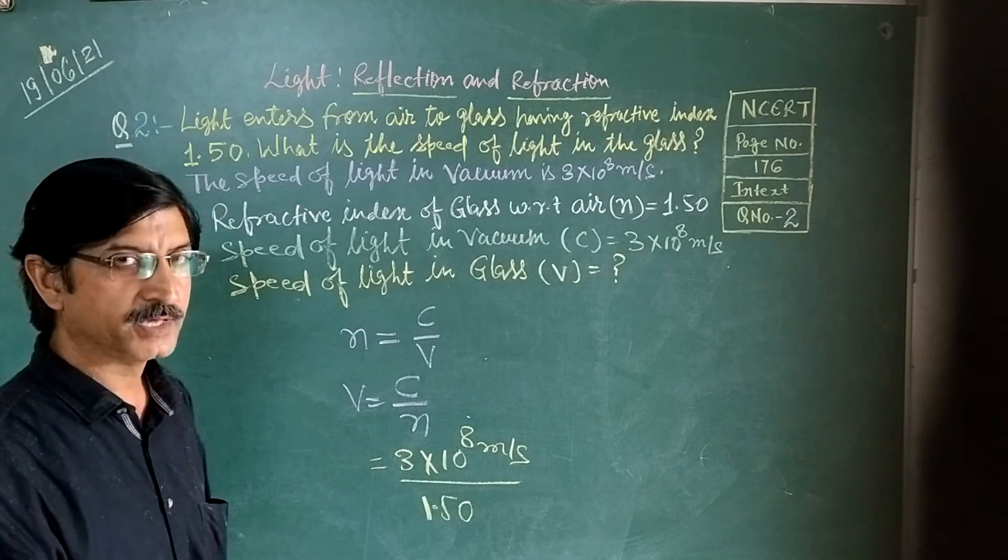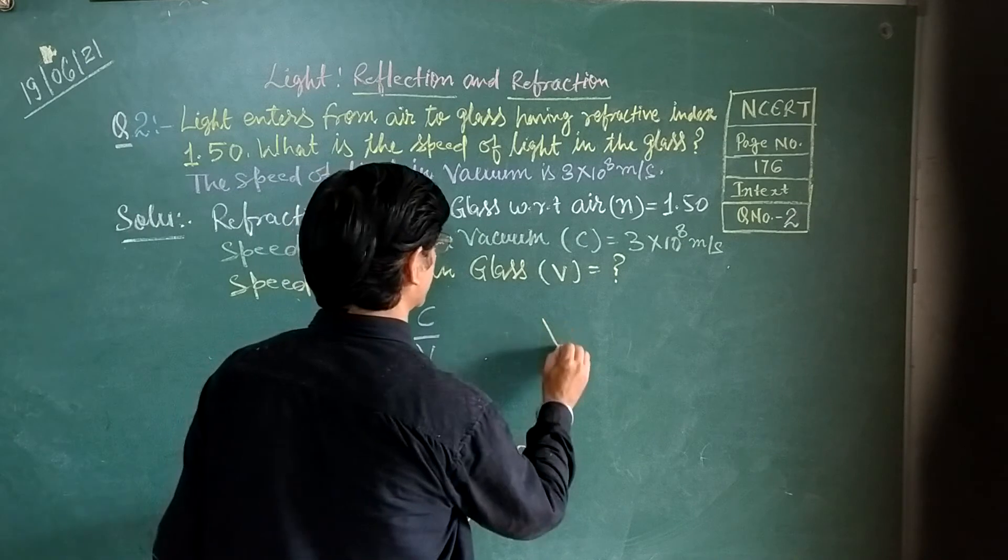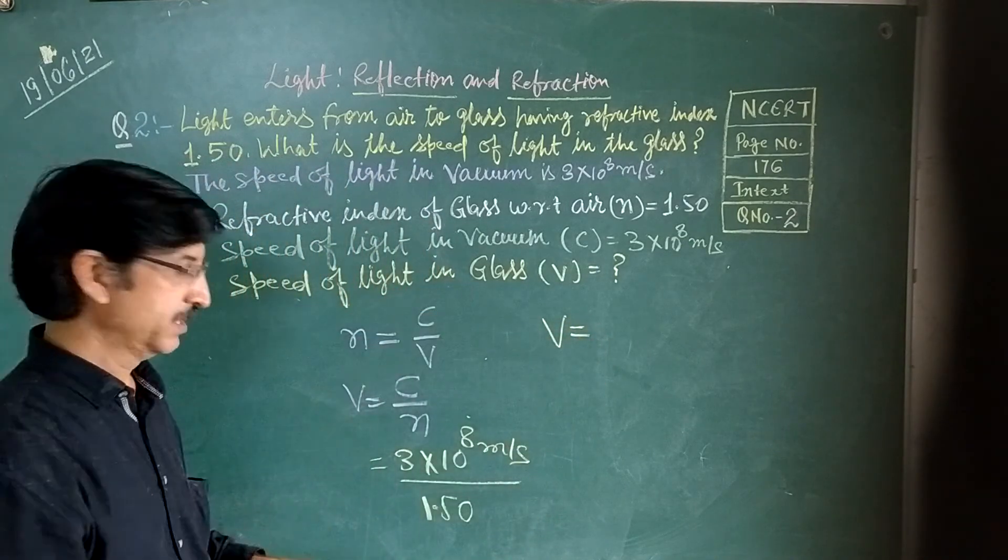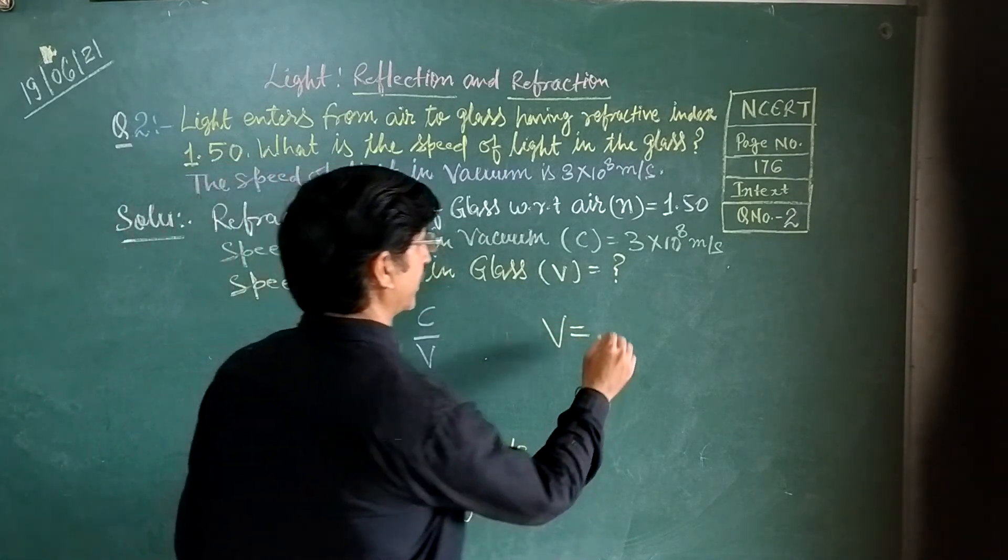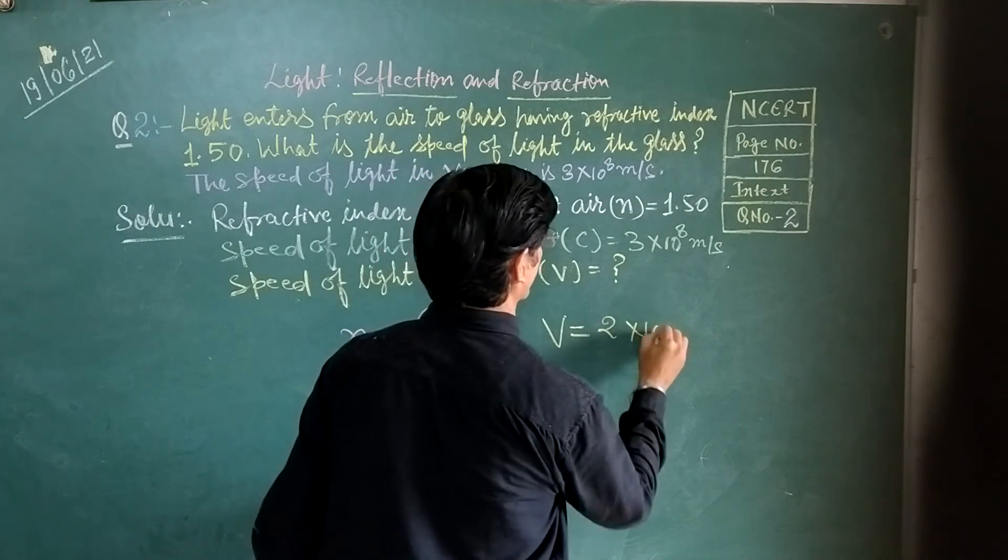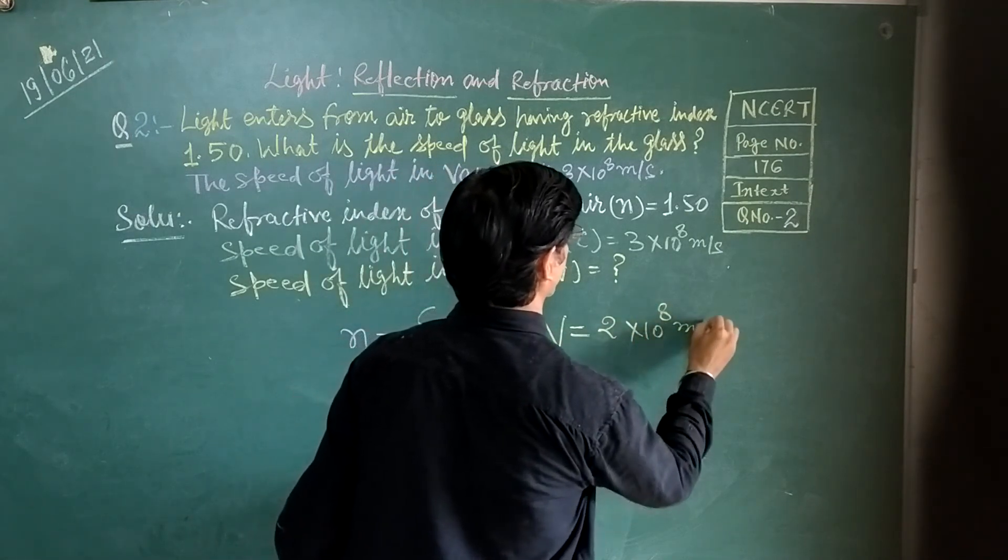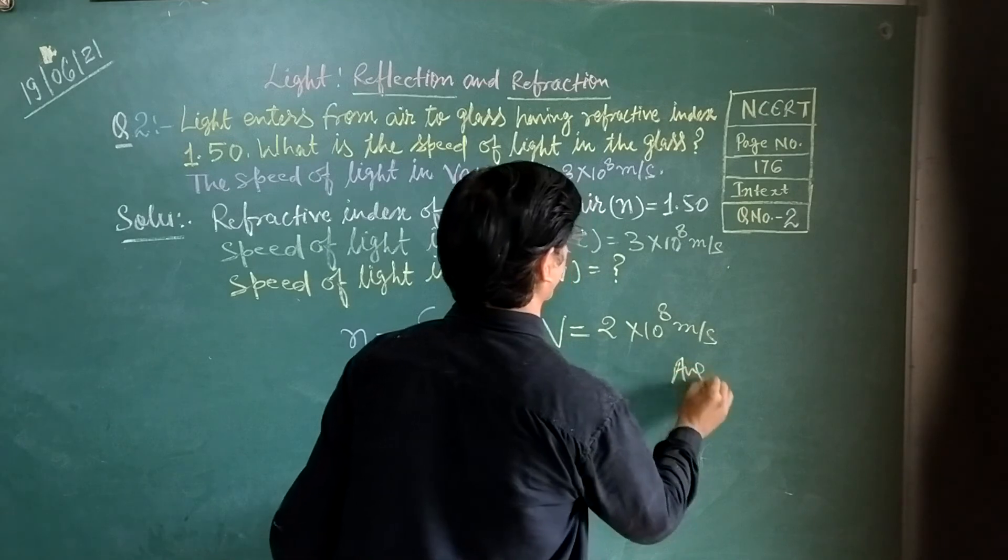Now we will solve for the speed of light in glass. We have the value of 3×10^8 meters per second divided by 1.50. This is our required answer.